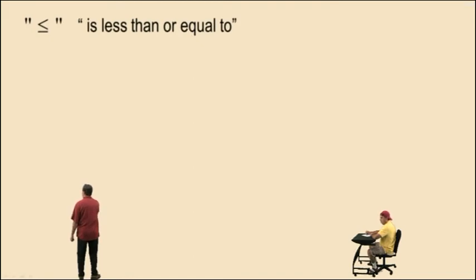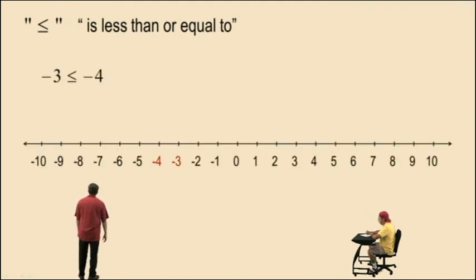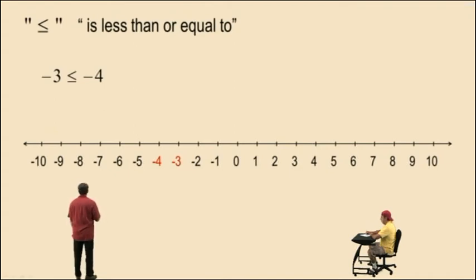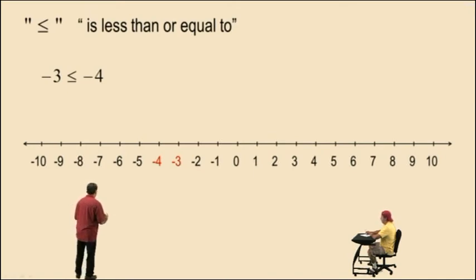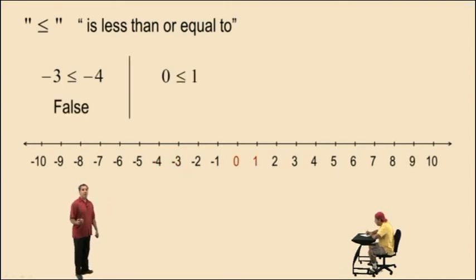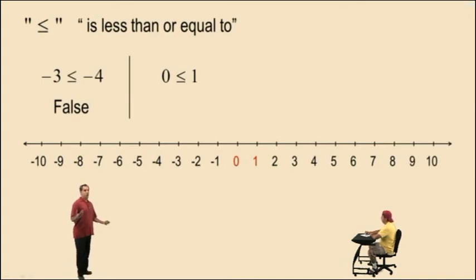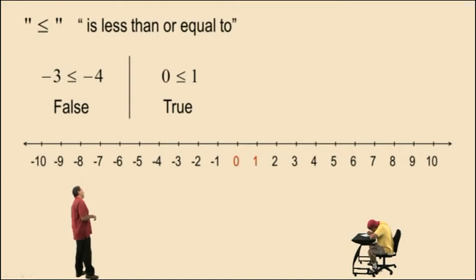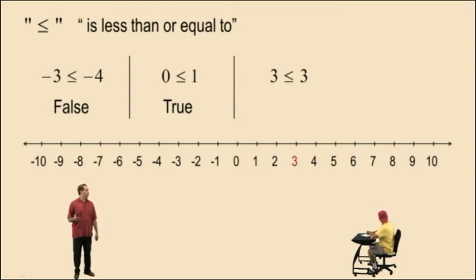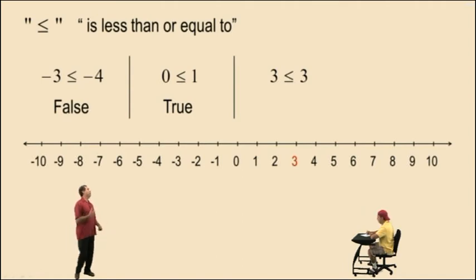Less than or equal to. Notice you have the arrow pointing to the left and the bar which represents the equal sign. So that symbol is 'less than or equal to.' Charlie, here we have a problem: negative 3 is less than or equal to negative 4 — true or false? Is negative 3 to the left of negative 4? Nope. And negative 3 does not equal negative 4, so in both cases it was false — this statement is false. Zero less than or equal to 1 — is 0 to the left of 1? Yes. Does 0 equal 1? Nope. But because we have one of them being yes, our answer is true. So it is a true statement. 3 less than or equal to 3 — is 3 less than 3? Nope. But is 3 equal to 3? Yes. So you fulfilled one of them, therefore 3 less than or equal to 3 is true.